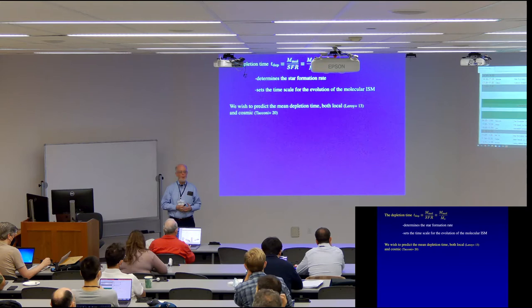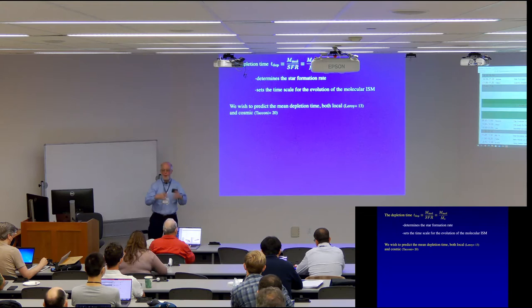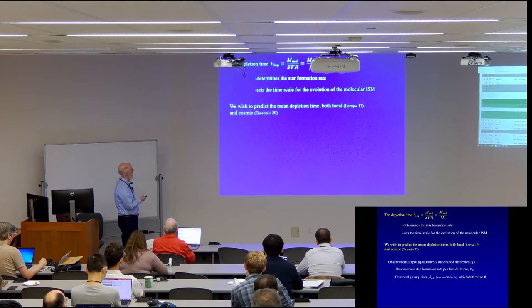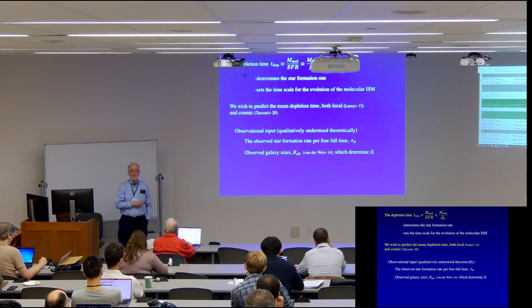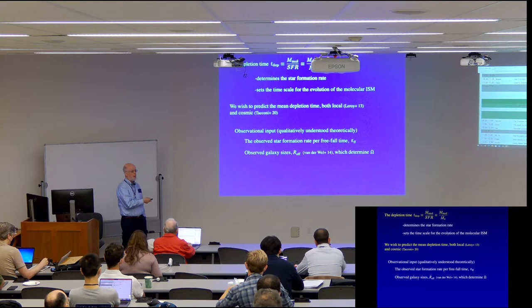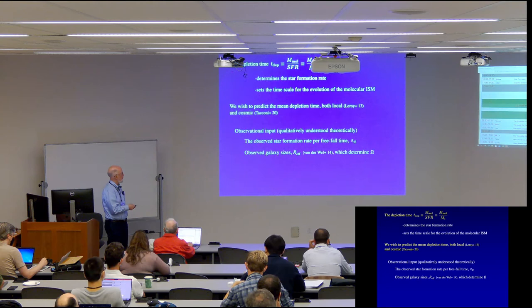As we know, the star formation depends on both the fact that you have to accumulate the molecular gas in which the stars are going to form. And then you have to determine how fast that gas is going to be consumed. And that's the depletion time, and that's the focus of my talk today. And I want to look at it both locally and on a cosmic scale. And we're going to have some observational input. But the observational input is actually fairly well backed up by theory. So, I'm going to use both the observed star formation rate per free fall time.